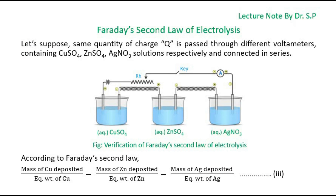Suppose the same quantity of charge Q is passed through different voltimeters containing copper sulfate (CuSO4), zinc sulfate (ZnSO4), and silver nitrate (AgNO3) solutions respectively, connected in series. According to Faraday's second law, mass of copper deposited divided by equivalent weight of copper equals mass of zinc deposited divided by equivalent weight of zinc equals mass of silver deposited divided by equivalent weight of silver.